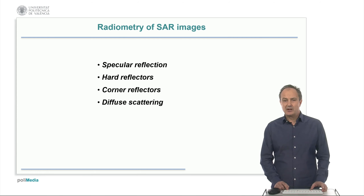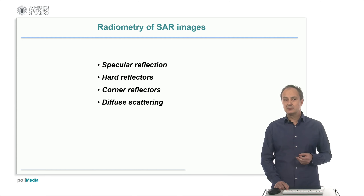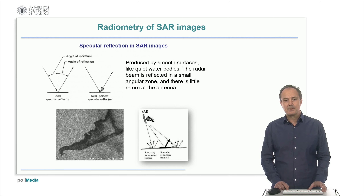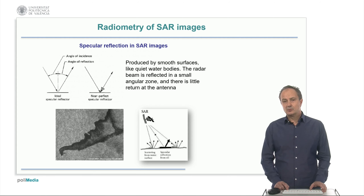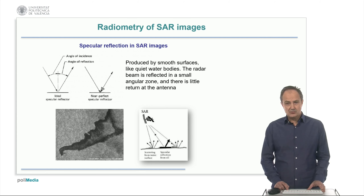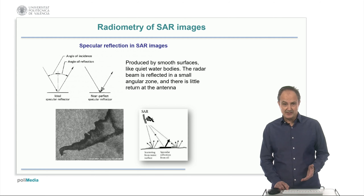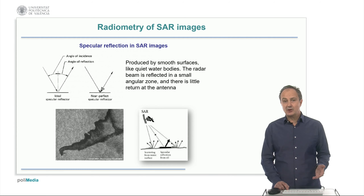The most common types of radiometric response in a radar image are specular reflection, hard reflectors, corner reflectors, and diffuse scattering. Specular reflection is produced by smooth surfaces where the angle of reflection is similar to the angle of incidence. This effect is used in applications such as spill detection, where the smoother surface of the oil increases the specular reflection component, so the energy is reflected out of the scope of the system and the oil slick appears darker in the image.